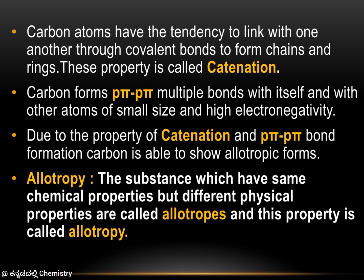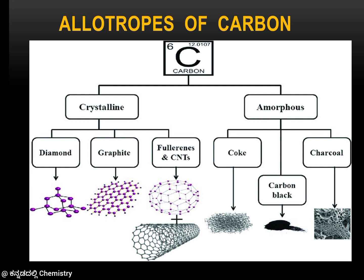Carbon exists in allotropes. Allotropy is the property where the same element has the same chemical properties but different physical properties. The allotropes of carbon are classified into two types: crystalline and amorphous.